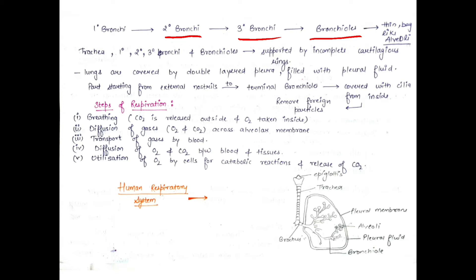The function of these cartilage rings is to maintain the structure so that these airways don't collapse. The lungs are covered by a double layer called the pleura, and pleural fluid is present which prevents the lungs from any shock. The parts from the external nostrils to the terminal bronchioles are lined with cilia on the inside, so that any invading material or foreign particle can be removed with the help of cilia.